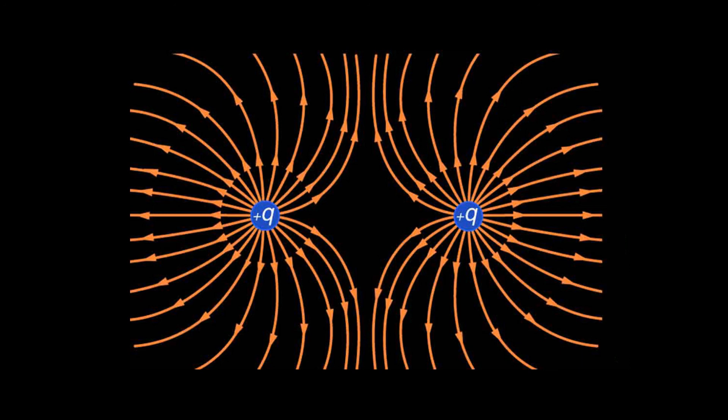Look at how densely packed the lines are right next to the point charges. Those are there to illustrate how strong the electric field is near those point charges and how it slowly gets weaker and weaker as we go out.